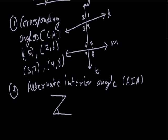In the same way, with the reverse Z-shape, these two angles also form alternate interior angles. So angle 4 and angle 6 will also form alternate interior angles. The two pairs of alternate interior angles are (3,5) and (4,6).